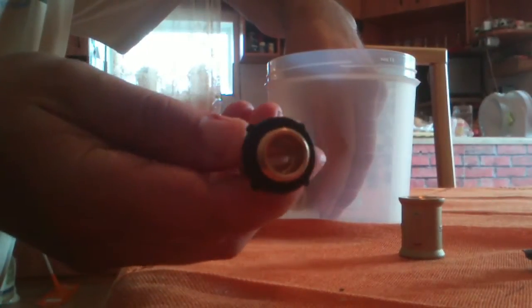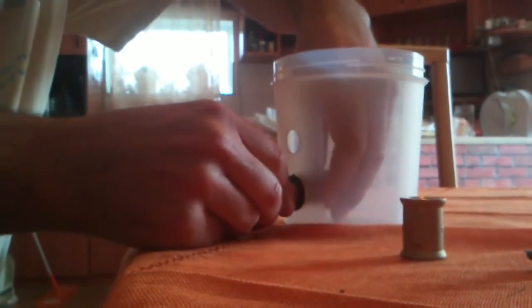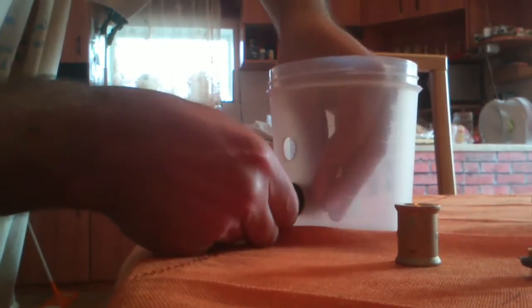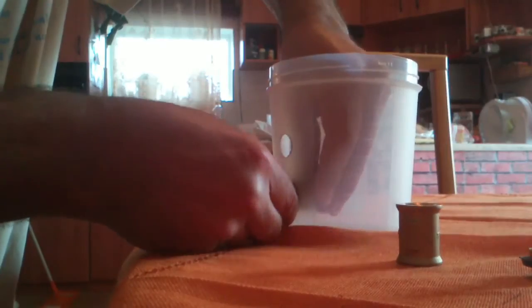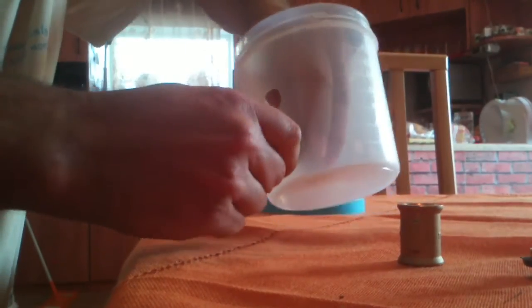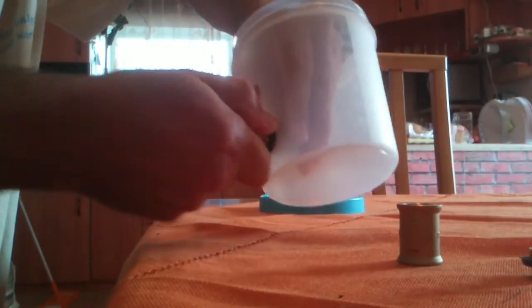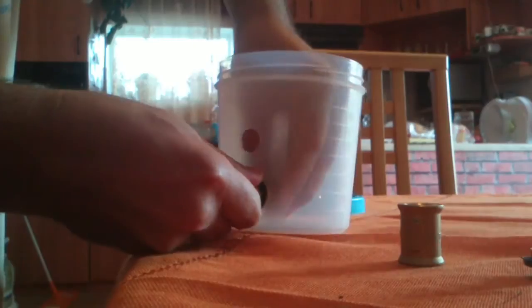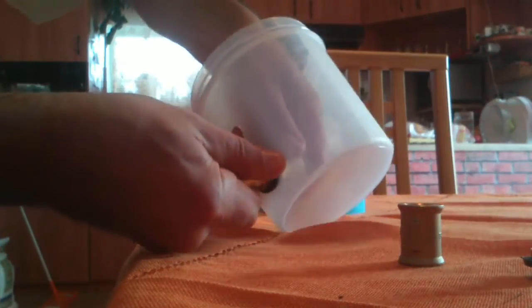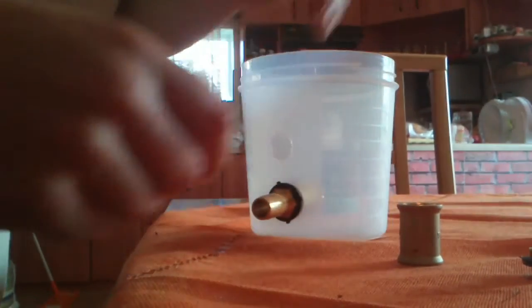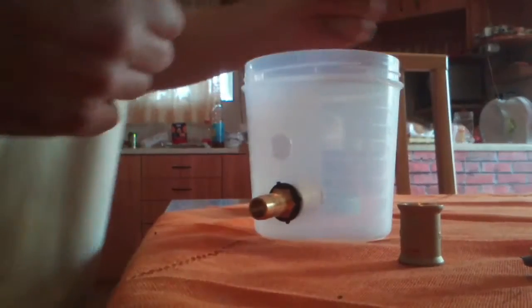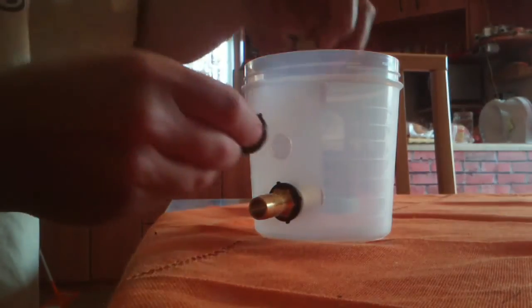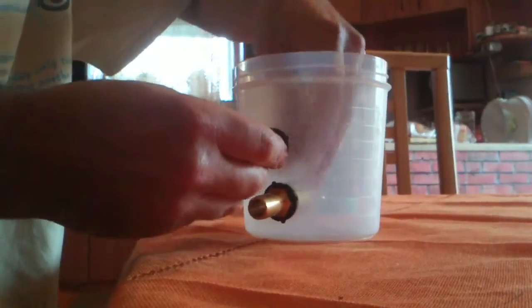I'll put a rubber gasket on there so it won't leak water. It's a little hard to get on there but there we go, one's on. You can tighten that up later on with a spanner or something, as long as your water doesn't leak. And there's the next one.